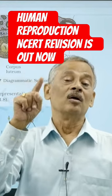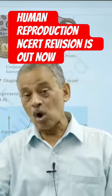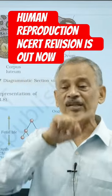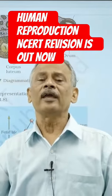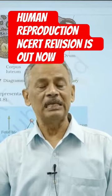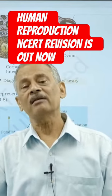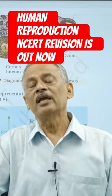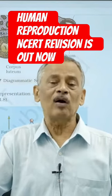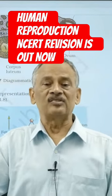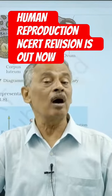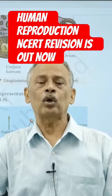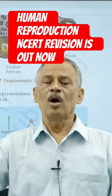The released ovum has not completed the second meiosis. It is covered by a gelatinous, jelly-like layer called the zona pellucida, and around that there is a layer of follicular cells called the corona radiata.